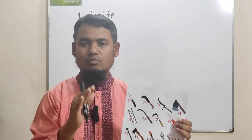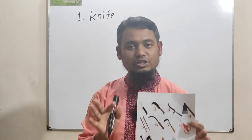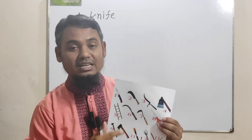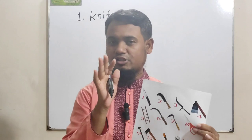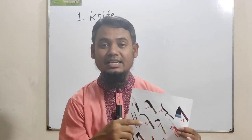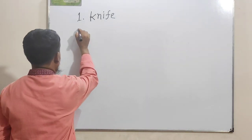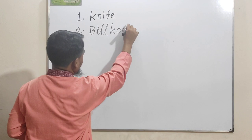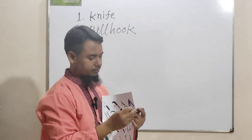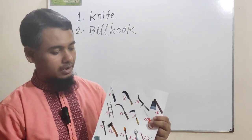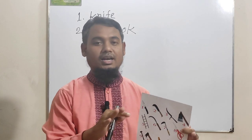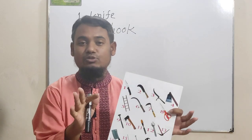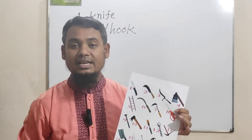Picture number two — maximum people know this tool but they don't know the English name. Picture number two is billhook. Billhook is used to cut bamboo and in some cases it is used to cut the branches of trees and so on. This tool name is billhook.